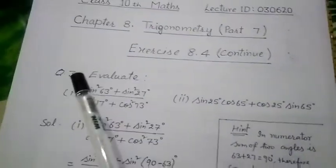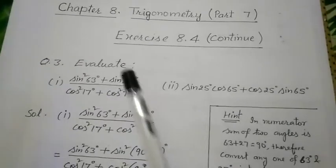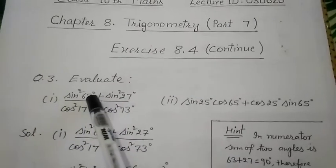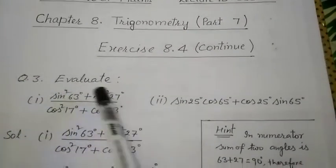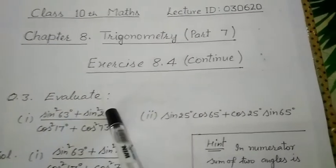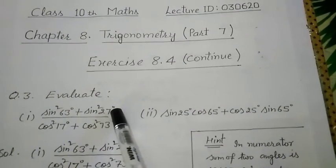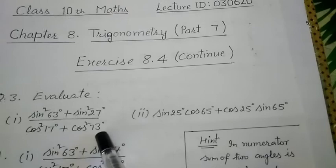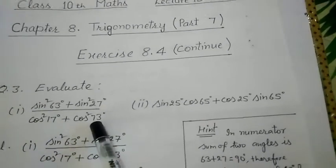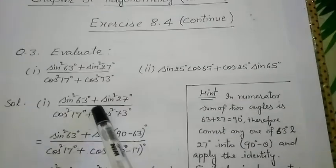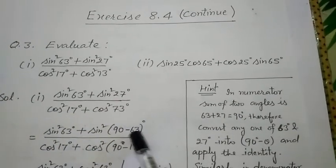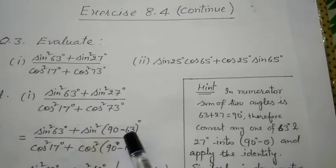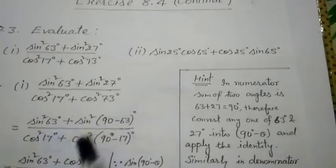Let us start Question 3. It says 'evaluate' — we need to find the value. We will look for an identity. In the numerator, 63 and 27 sum to 90, so we will change one of these angles to (90 minus theta). Similarly, 17 and 73 also sum to 90, so we will change one of those angles to (90 minus theta) as well.